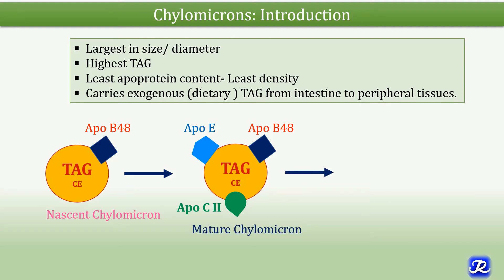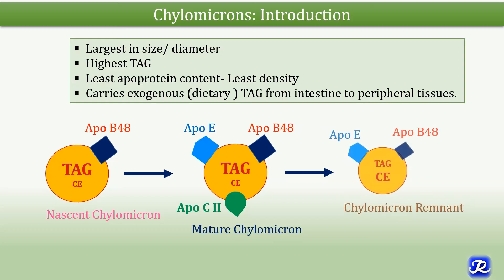Later in the course of metabolism, the chylomicron becomes smaller in size. The triacylglycerol content is reduced and it only has ApoE and ApoB48 associated with it. This is called the chylomicron remnant.